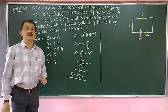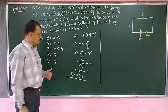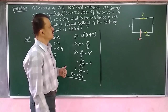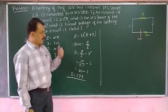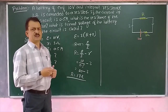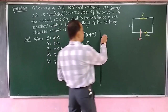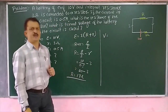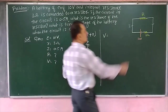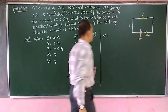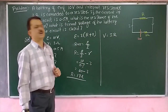Now we have to calculate terminal potential, terminal voltage. We are familiar with the definition of EMF as well as terminal voltage. EMF is the potential difference across the terminals of the battery when the circuit is open — that means when no current is flowing. Terminal voltage is the potential difference across the terminals of the battery when the circuit is closed — that means when current starts to flow. We have to calculate what is the potential across this resistor, which can be calculated using Ohm's law.